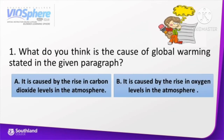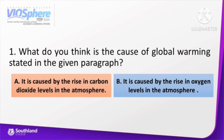Sample number 1 question: What do you think is the cause of global warming as stated in the given paragraph? A. It is caused by the rise in carbon dioxide levels in the atmosphere, or B. It is caused by the rise in oxygen levels in the atmosphere. Very good! The correct answer is letter A — it is caused by the rise in carbon dioxide levels in the atmosphere.